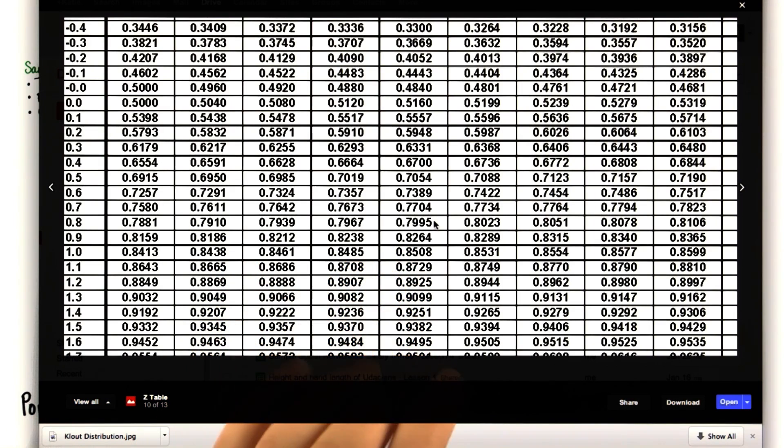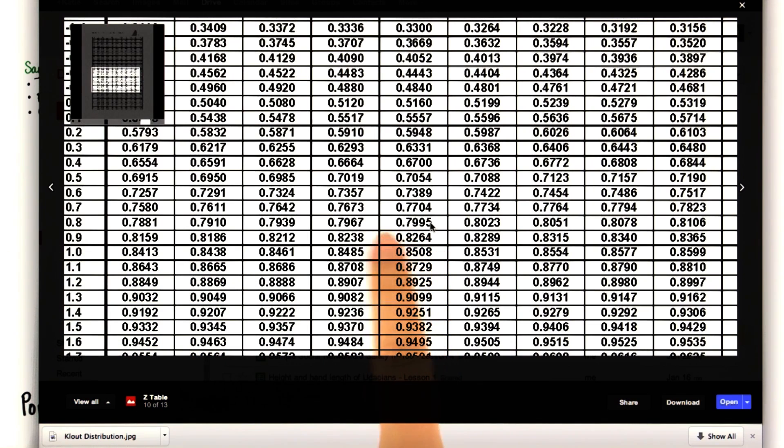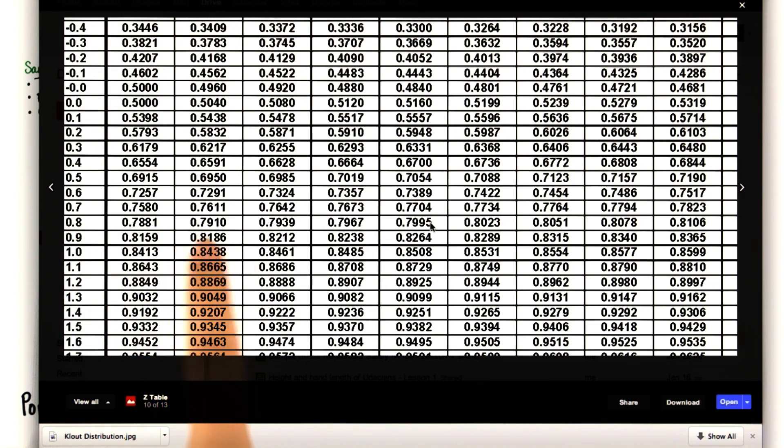We know the z-score, so we can find the probability of getting anything less than that z-score using our z-table. So here's 0.8, and here's the column where it intersects 0.04. So the probability of getting less than a mean of 40 is 0.7995.